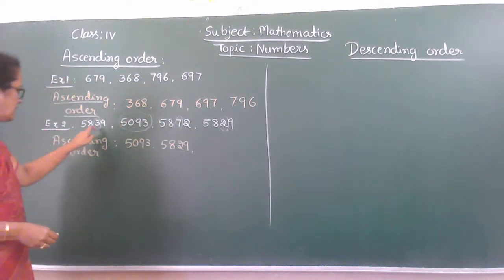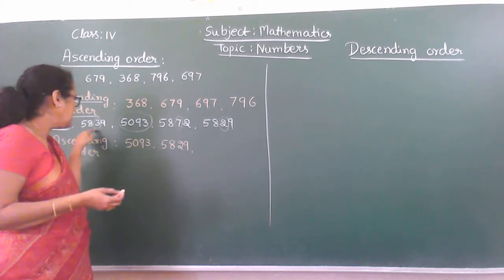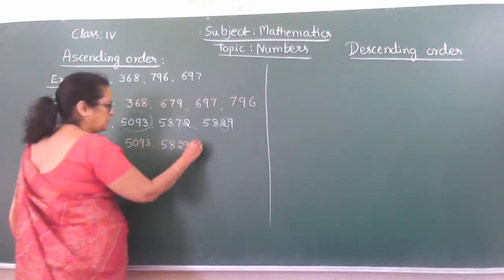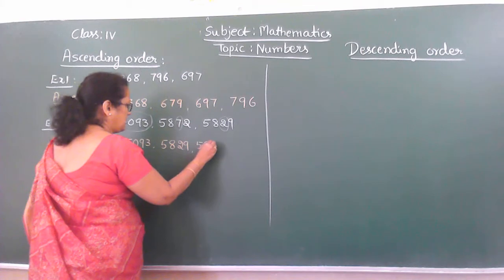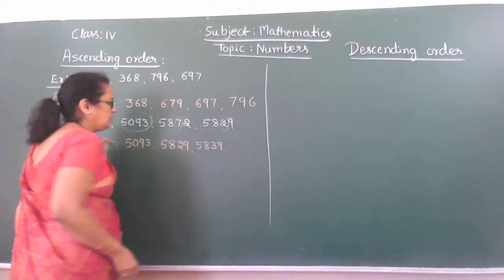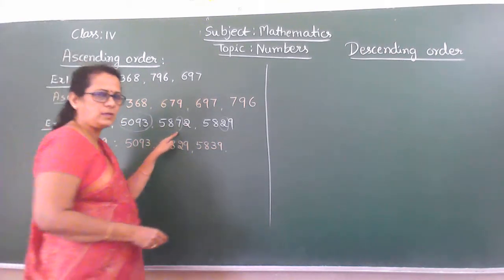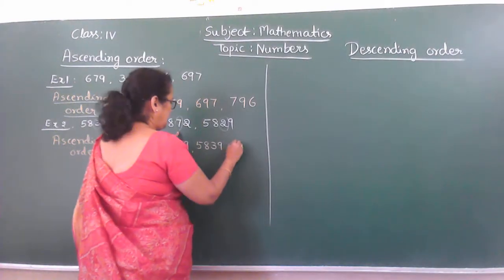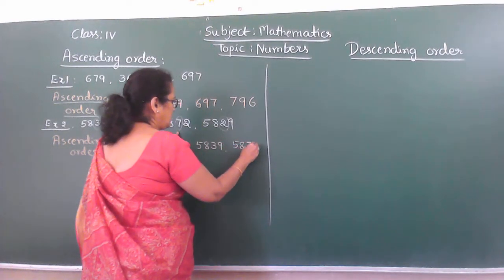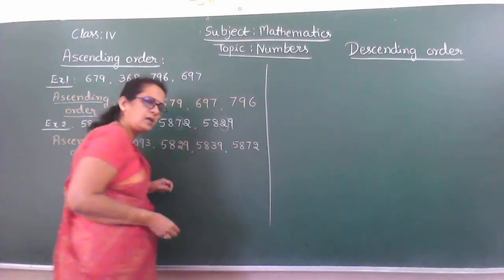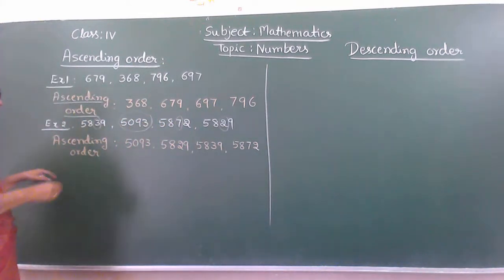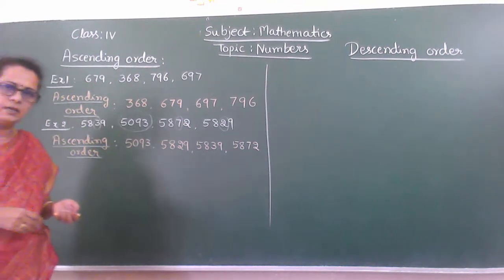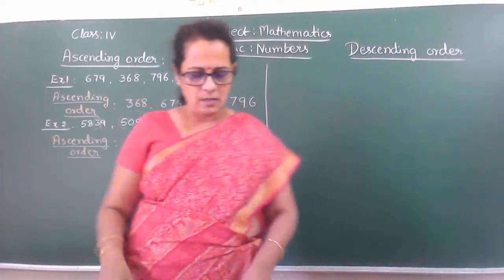After 2, the next little bit larger number in the tens place is 3. That is 5,839. And the last, biggest, greatest number is 5,872. So like this, you write the given numbers and arrange them in ascending order.